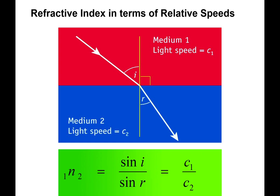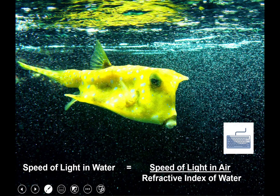The refractive index also relates to the speed of light in a material. The higher the refractive index, the greater the change in speed. Diamond will slow down light the most while water slows it the least. The refractive index n equals sine i over sine r, and also equals the speed of light in air divided by the speed of light in the material through which it's traveling.